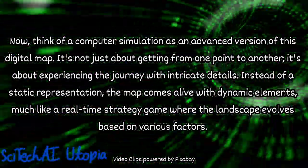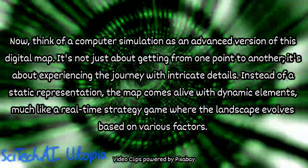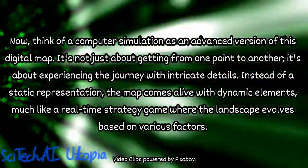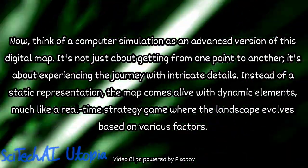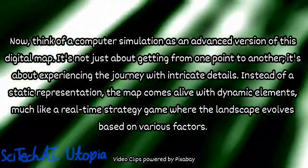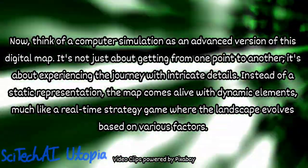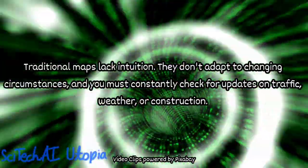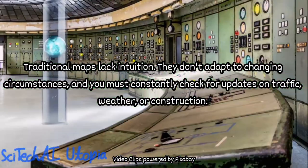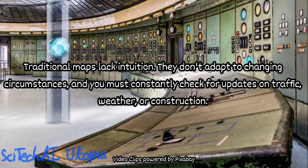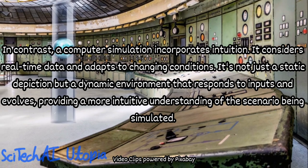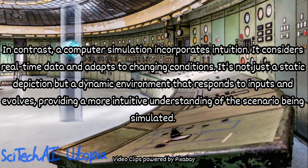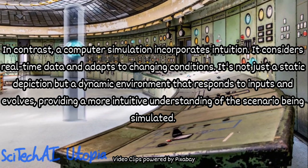Now extend this idea to a computer simulation. But instead of a road trip, you are exploring complex scenarios like predicting weather patterns, understanding the behavior of a new material in a laboratory, or studying the dynamics of a biological system. A computer simulation is like a digital map, but for a much more intricate system. It represents a real-world situation using mathematical equations and models. Just as a map simplifies the geography of a city, a simulation simplifies and abstracts the details of a complex system, capturing its essential features.